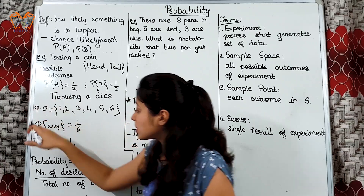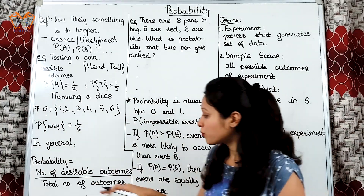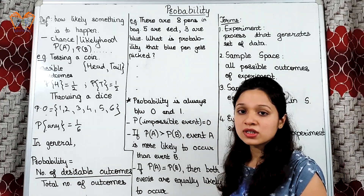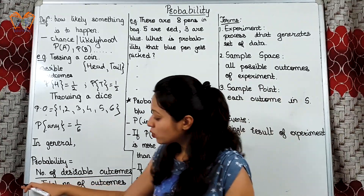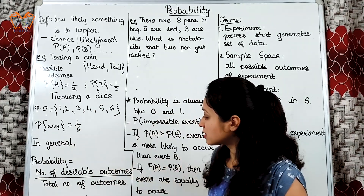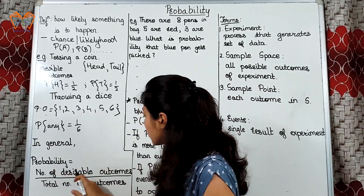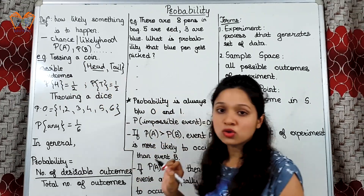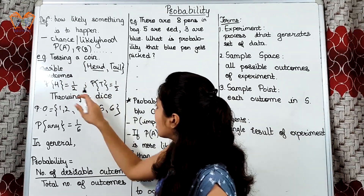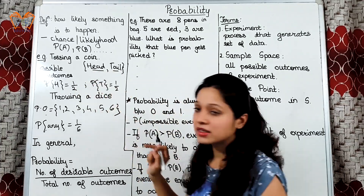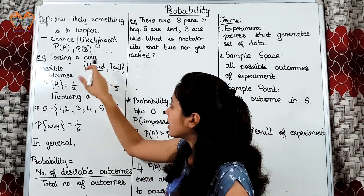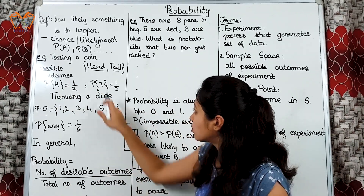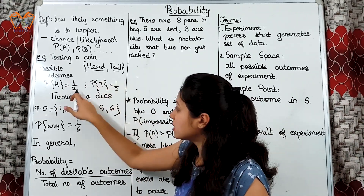So, with these two examples, we can conclude the formula for probability. It is: number of desirable outcomes divided by the total number of outcomes. Let us correlate this formula with both the examples. In tossing the coin, the number of desirable outcomes — either head can appear or tail can appear. Suppose head is to appear, the number of desirable outcomes will be 1 and total number of outcomes were 1 plus 1, that is 2. And similarly it applies for throwing a dice.